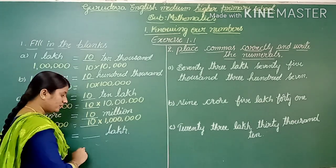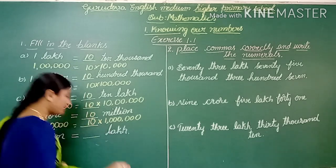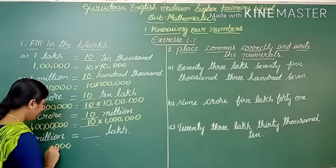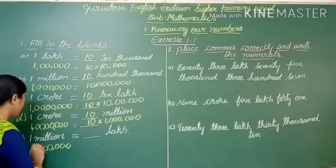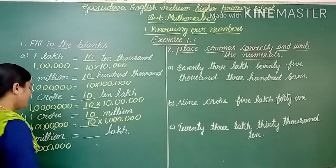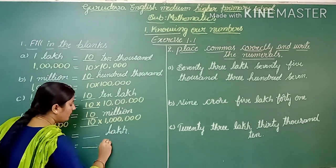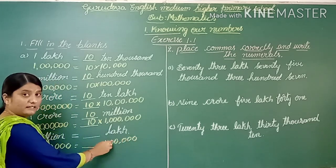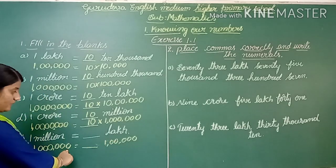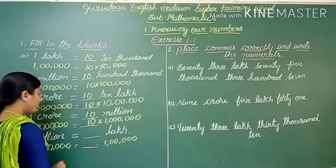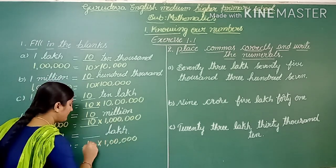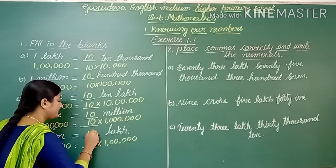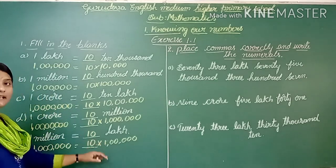Fifth: 1 million is equal to blank lakhs. Writing 1 million in numerals — 1,000,000 has 6 zeros. Writing 1 lakh — 1,00,000 has 5 zeros. We need to balance 1 zero by multiplying by 10. So 10 × 1 lakh equals 1 million, meaning 1 million equals 10 lakhs.